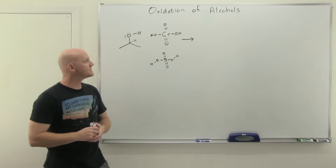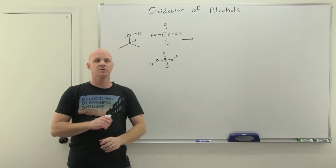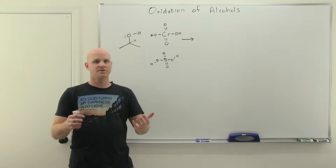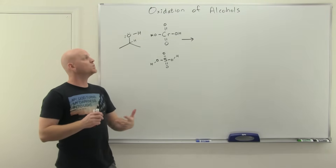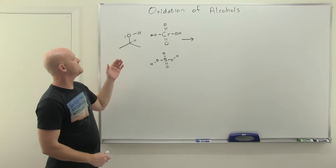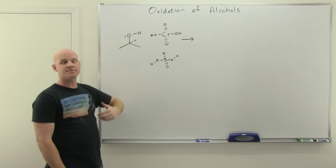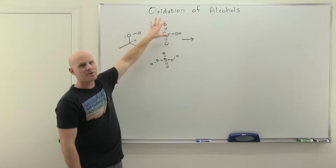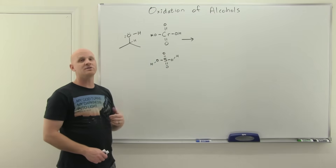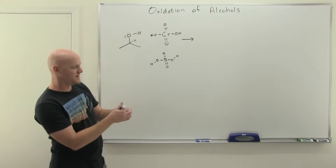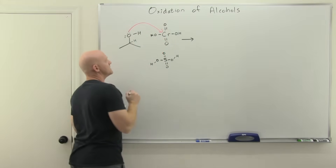Now let's go over the mechanism of chromic acid oxidation — only relevant for about 10–20% of students. We'll look at the oxidation of a secondary alcohol to a ketone. Chromic acid is often made in the presence of aqueous sulfuric acid, which plays a role in the mechanism. The mechanism starts with nucleophilic attack from the alcohol oxygen to chromium, and the pi electrons get pushed out to grab a proton from sulfuric acid. So chromium ends up with a third OH group.